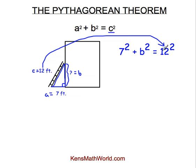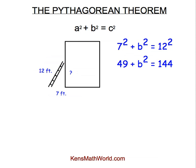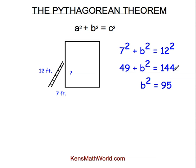So now I have 7 squared plus B squared equals 12 squared. And 7 squared is 49. And 12 squared is 144. So now I have 49 plus B squared equals 144. And next I need to subtract 49 from both sides. By both sides, I mean both sides of the equal sign. This cancels on this side, and I'm left with B squared equals 95 because 144 minus 49 is 95.